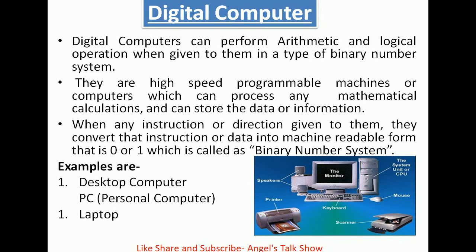Next one is digital computer. Digital computers can perform arithmetic and logical operations when given to them in a type of binary number system. They are high speed programmable machines which can process mathematical calculations and can store data or information. When any instruction or data is given to them, they convert it into machine readable form — that is 0 or 1, which is called the binary number system.